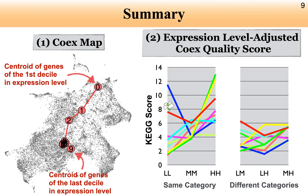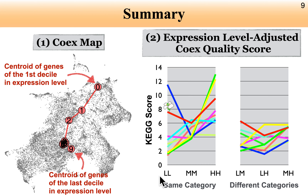In summary, we first found that there are associations between expression level and gene co-expression relationships. For further improvement of gene co-expression calculation, we propose a new co-expression score: the average of stratified KEGG scores, which we call the expression-level adjusted co-expression quality score. That's all. Thanks for listening.